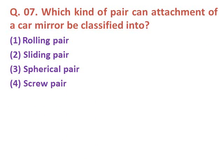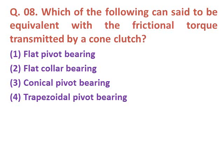Question seven: What kind of pair can the attachment of a car mirror be classified into? Option one: rolling pair. Option two: sliding pair. Option three: spherical pair. Option four: screw pair. The correct answer is spherical pair — a spherical pair is present in the car mirror.